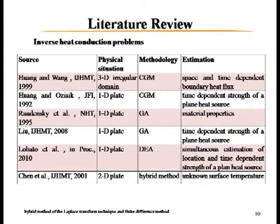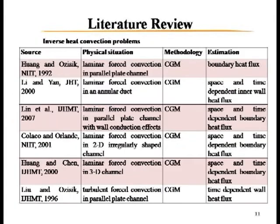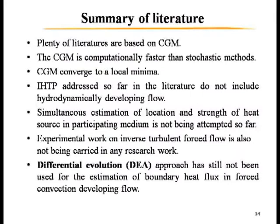Now let me discuss the literature on inverse heat transfer problems. In conduction problems, researchers have estimated boundary heat flux, temperature, and material properties by applying the conjugate gradient method (CGM) and genetic algorithm (GA). In inverse heat convection problems, CGM is used extensively, and boundary heat flux, inlet temperature, and thermal properties are estimated. In radiation problems, radiation properties and heat flux are estimated using CGM and genetic algorithm.